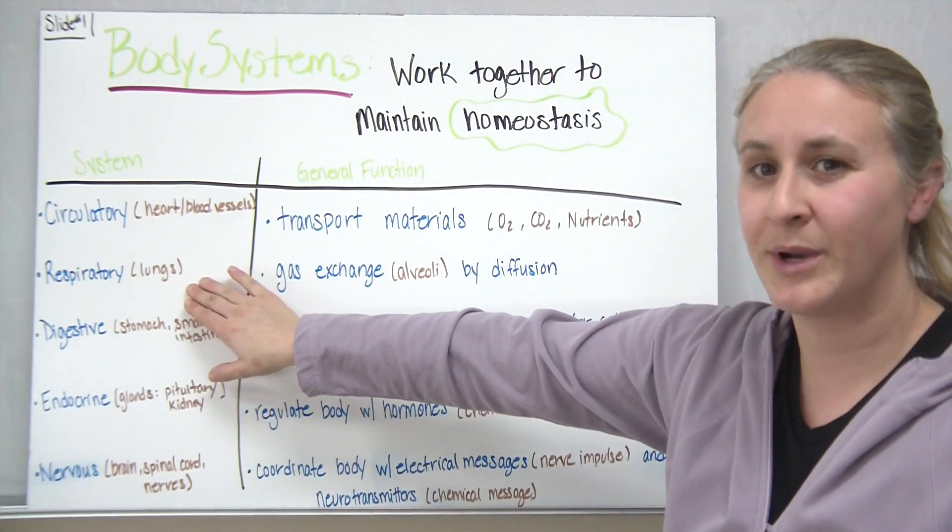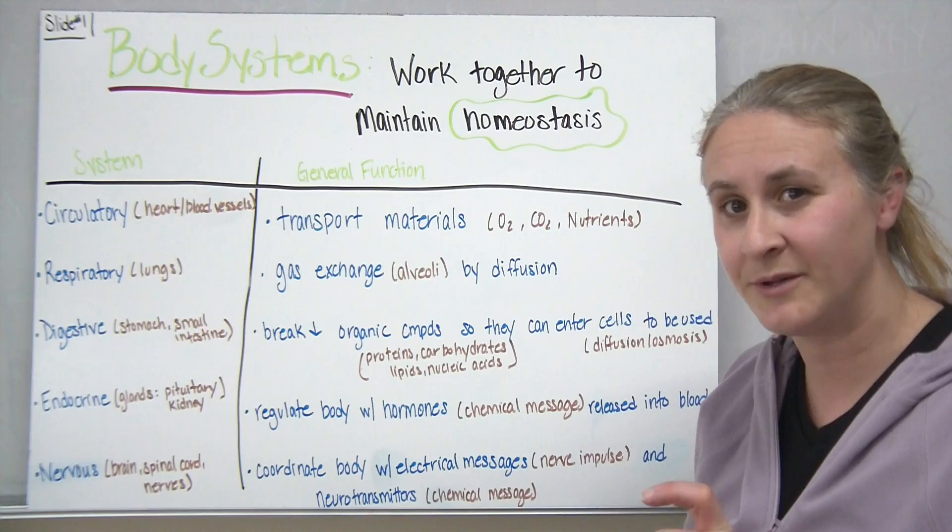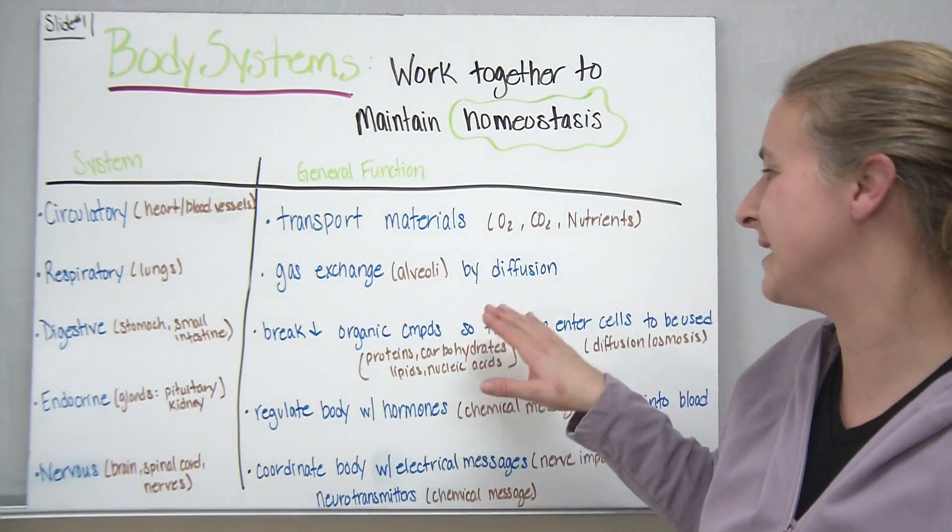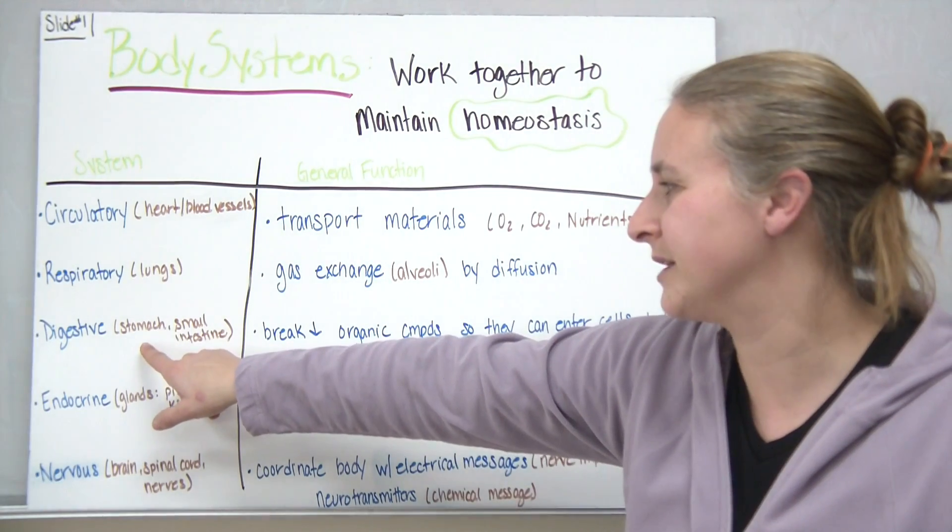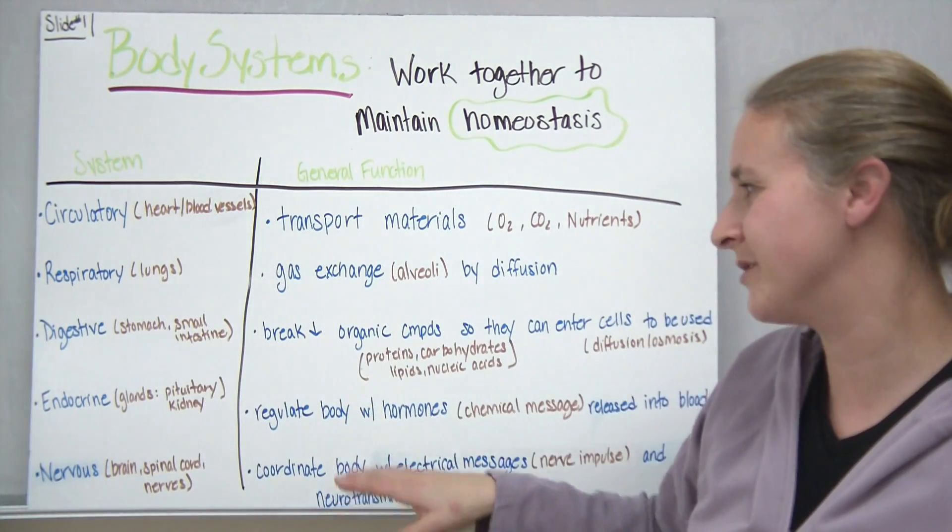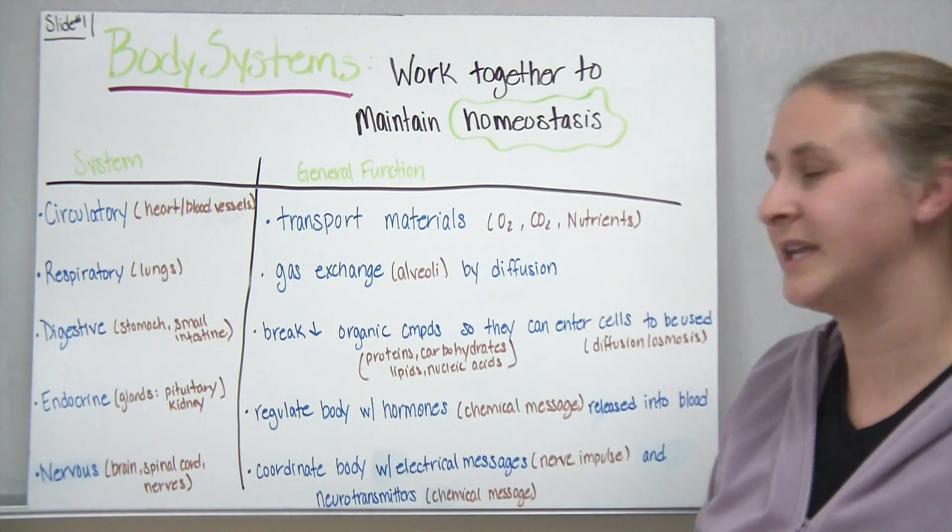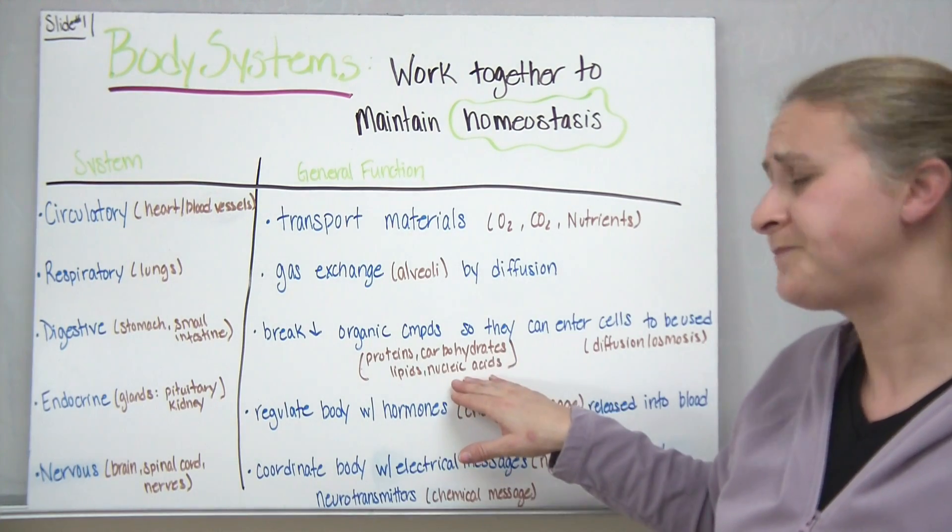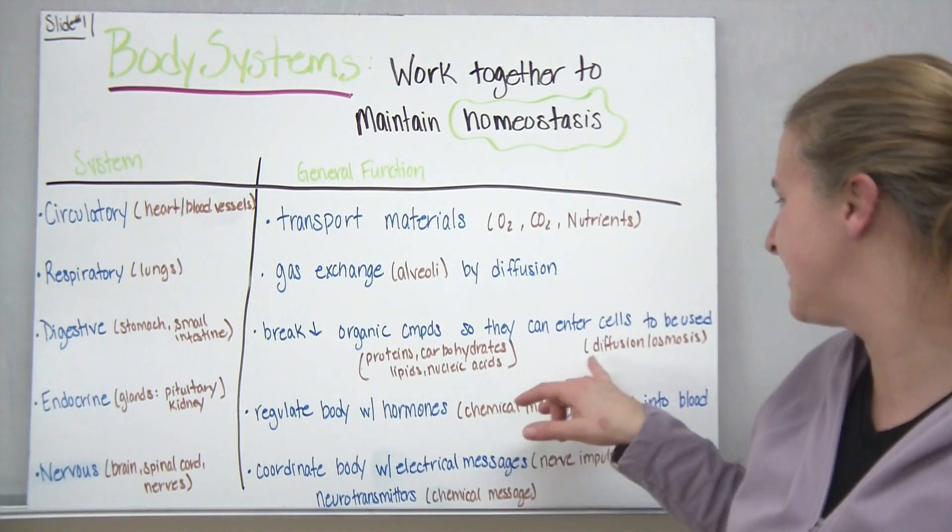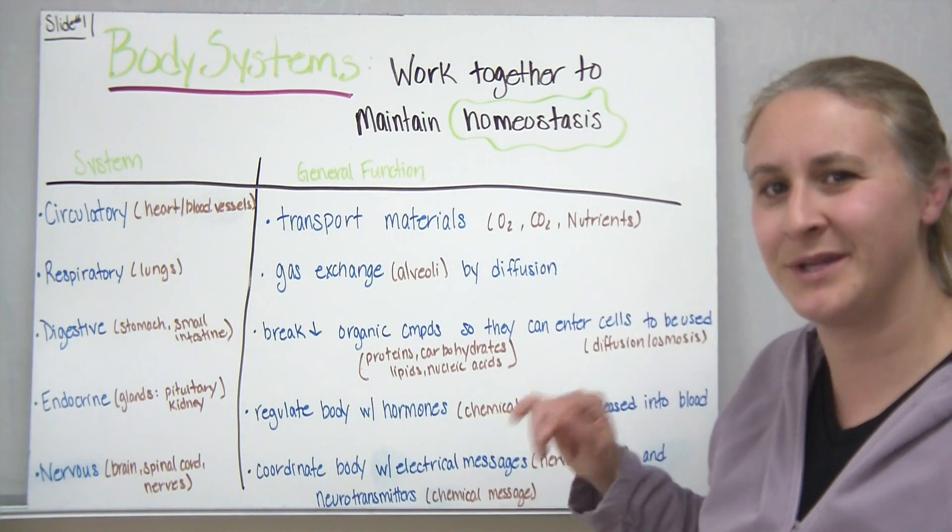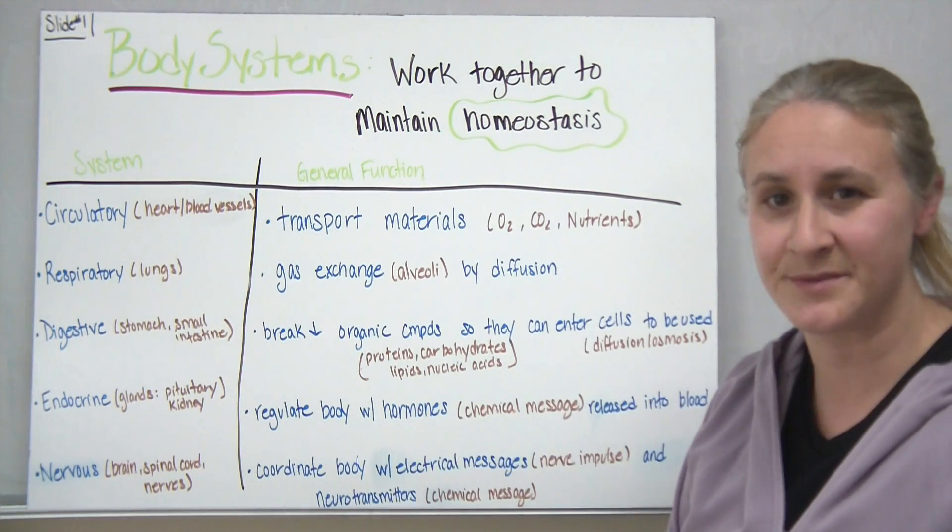Our respiratory system, primarily thinking of the lungs, are used for gas exchange which remember the primary structure there are the alveoli where the diffusion of the gases takes place. And then we have our digestive system which we think primarily of our main organs being the stomach and the small intestine, which we know there are others as well like the large intestine. Primary function is to break down organic compounds so they can enter the cells in order to be used. Remember our main organic compounds are proteins, carbohydrates, lipids, and nucleic acids and we know that we need to break things down into their building blocks from the major organic compounds in order for diffusion or osmosis to take place.